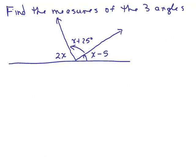Next problem: find the measures of the three angles. You see three angles — one angle is X minus 5 degrees, another is X plus 25 degrees, and the third is 2X. Put the video on pause and try this on your own first. This time we have three angles, but they form a straight line. A straight line is a straight angle, which is 180 degrees, so we're going to add the three angles to get 180 degrees.